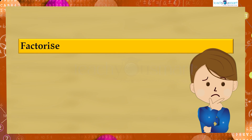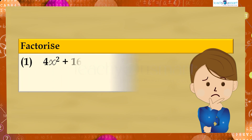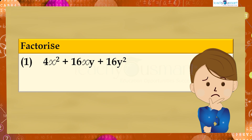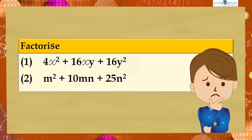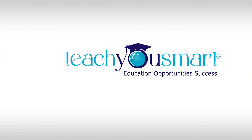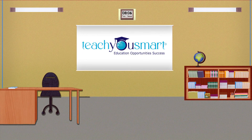Factorize: first, 4x² + 16xy + 16y²; and second, m² + 10mn + 25n². That's all for now, see you all in the next class.